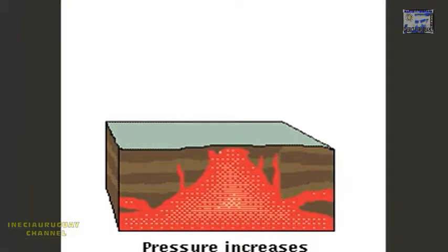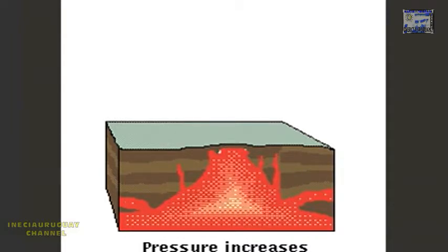Hot gases try to escape but are trapped in the magma. The surface begins to bulge. Finally, the pressure can no longer be contained. Gases and fragments of Earth are released in a violent explosion.